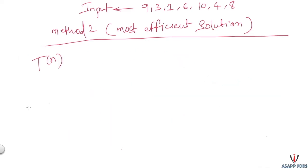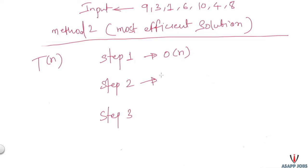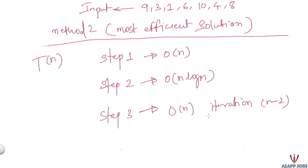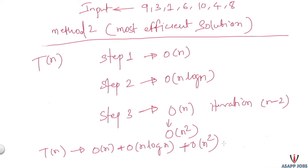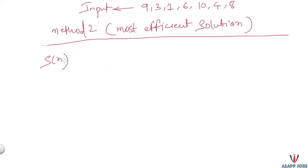Now let's calculate the time complexity of method two by analyzing each step. Step one (squaring all elements) takes O(n). Step two (sorting) takes O(n log n). Step three (finding the pair) runs in linear time per iteration, and we do n - 2 iterations, giving O(n²). The total time complexity is O(n) + O(n log n) + O(n²) = O(n²). The space complexity is O(1) since we make changes in-place and use no extra memory.